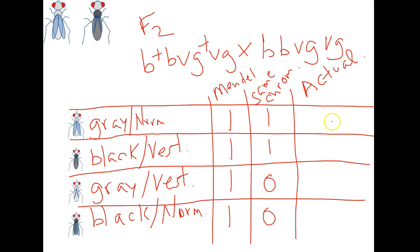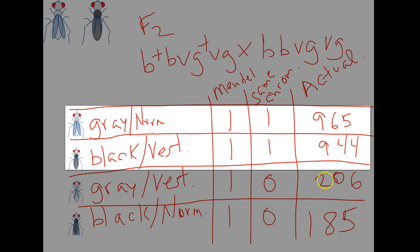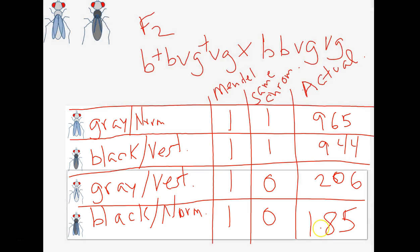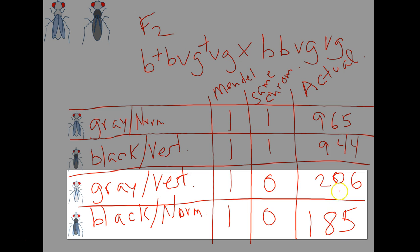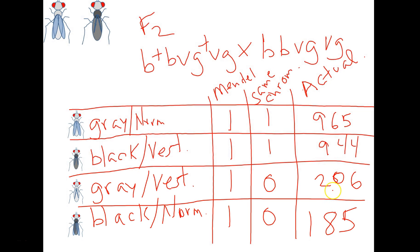So when Morgan did this cross, he actually noticed the following results. Morgan did notice that most of the offspring looked like one of the parents. However, in the other two categories, there was a smaller percentage of organisms that looked like the recombinants. So what did he conclude? He concluded that the genes were on the same chromosome, but some other mechanism must have contributed to them getting these new combinations. And we know that today as crossing over.